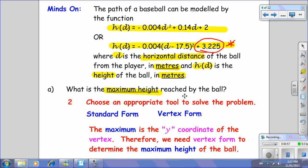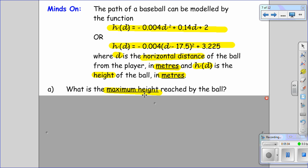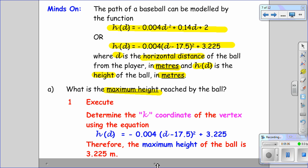So now I've chosen my form. Let's make sure I'm right here. Do I want vertex form? Most definitely. Standard form is just going to disappear. And I can use that vertex form to help me solve my equation or solve my problem. And I was correct. The maximum height of the ball is 3.225 meters.